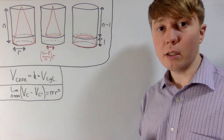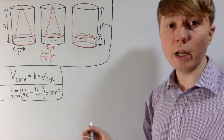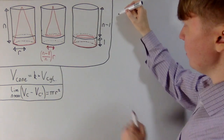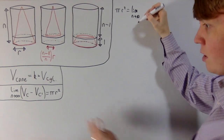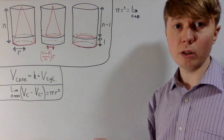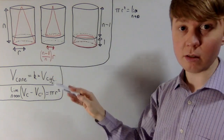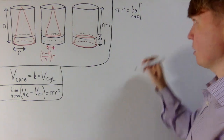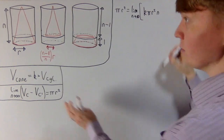Now we're going to find expressions for VC, the volume of the original cone, and VC dash, the volume of the slightly smaller cone, expressed in terms of r, n, and this constant k. The volume of the cylinder is πr²n, so multiplying by k gives us the volume of the original cone: VC = k·πr²·n.